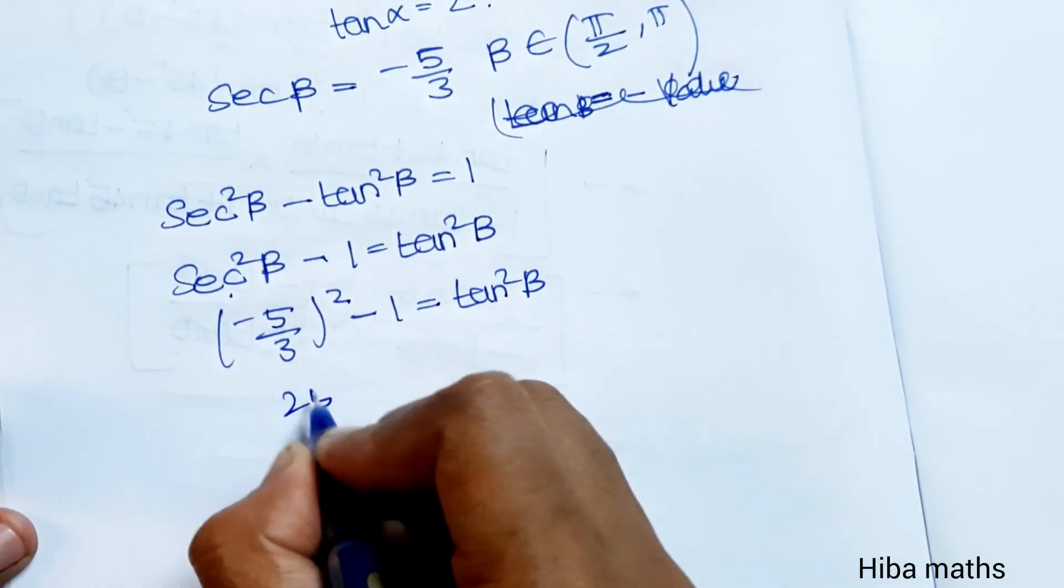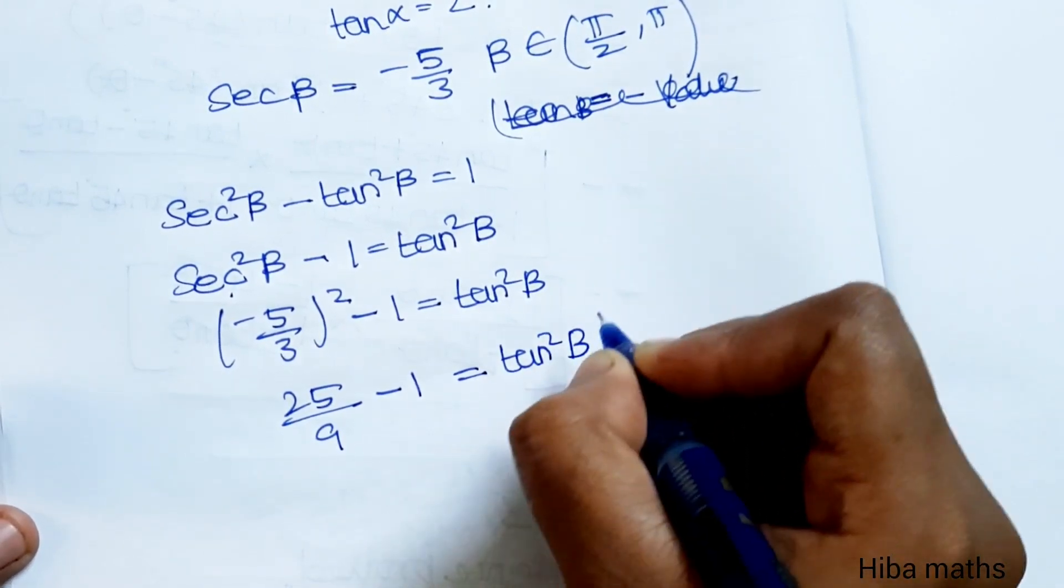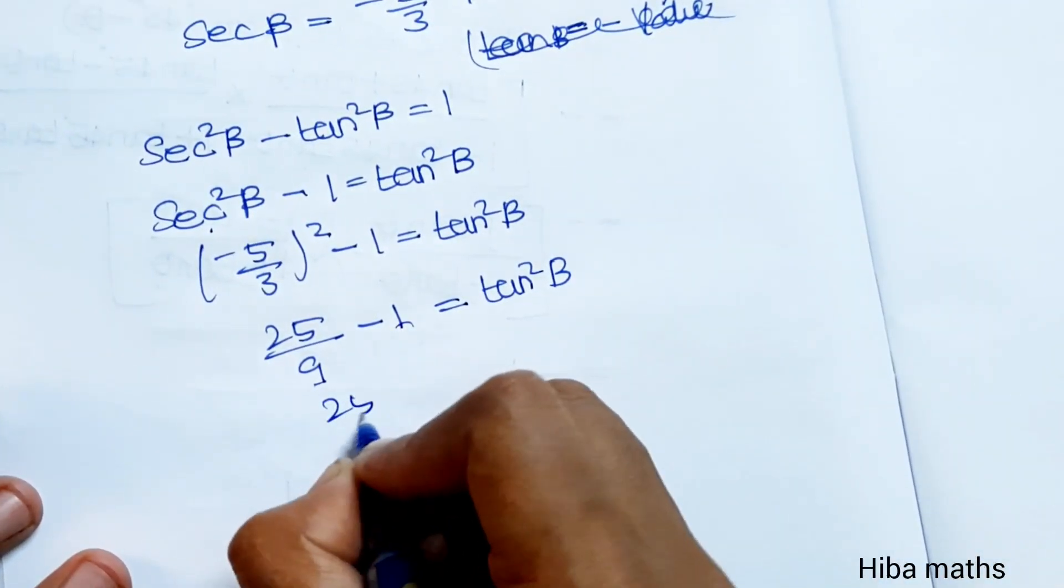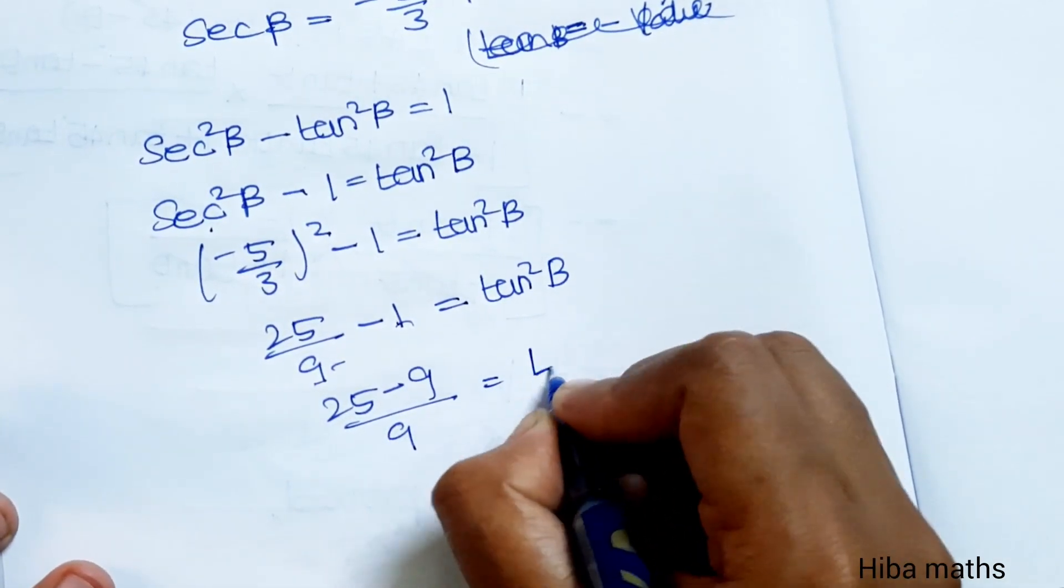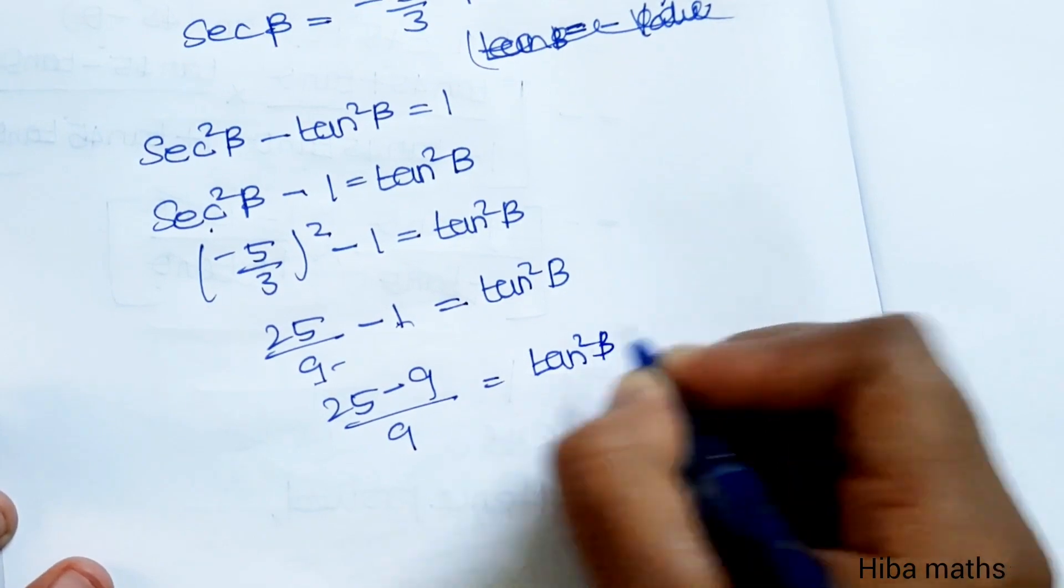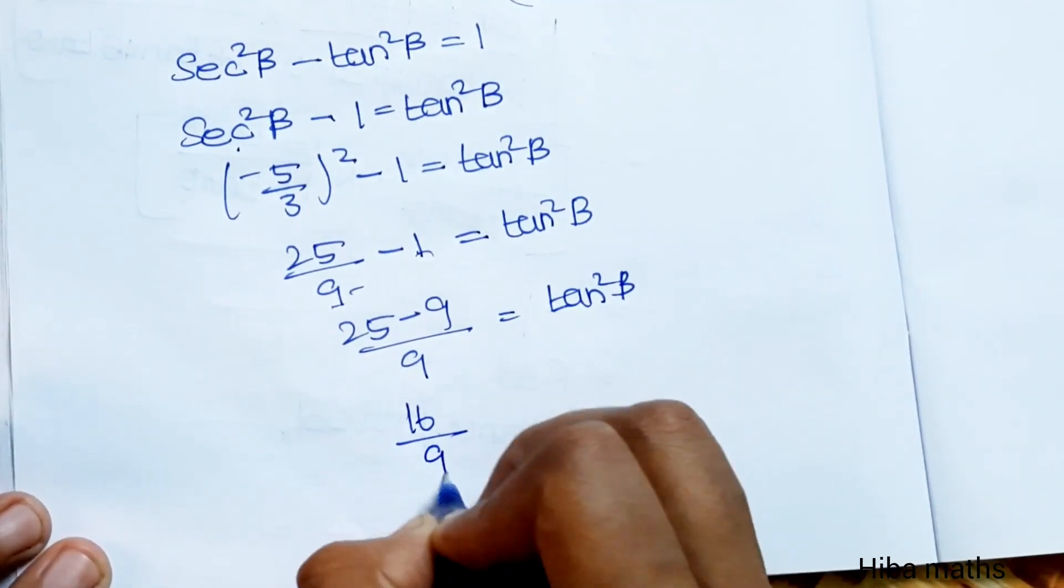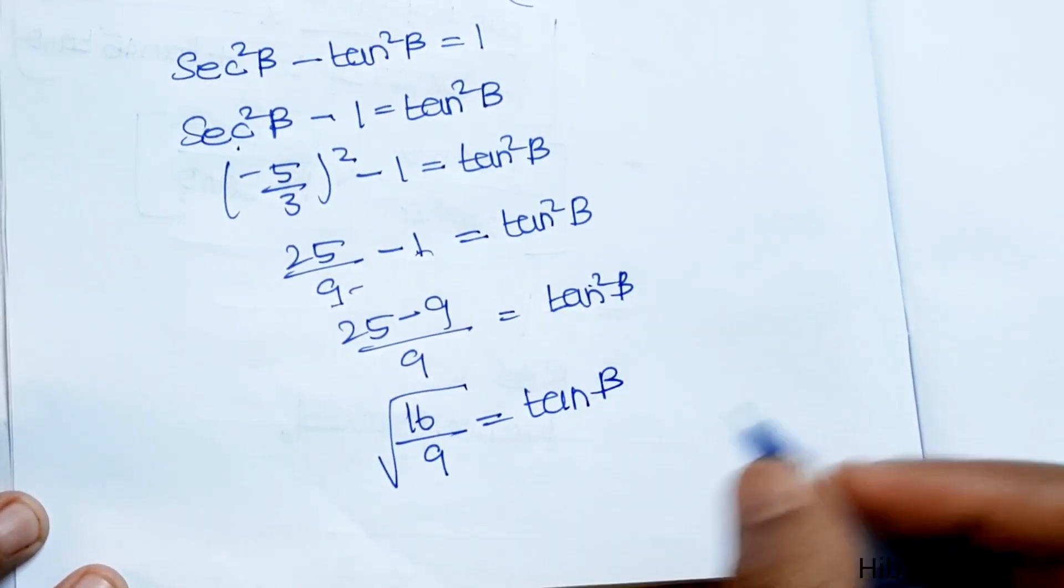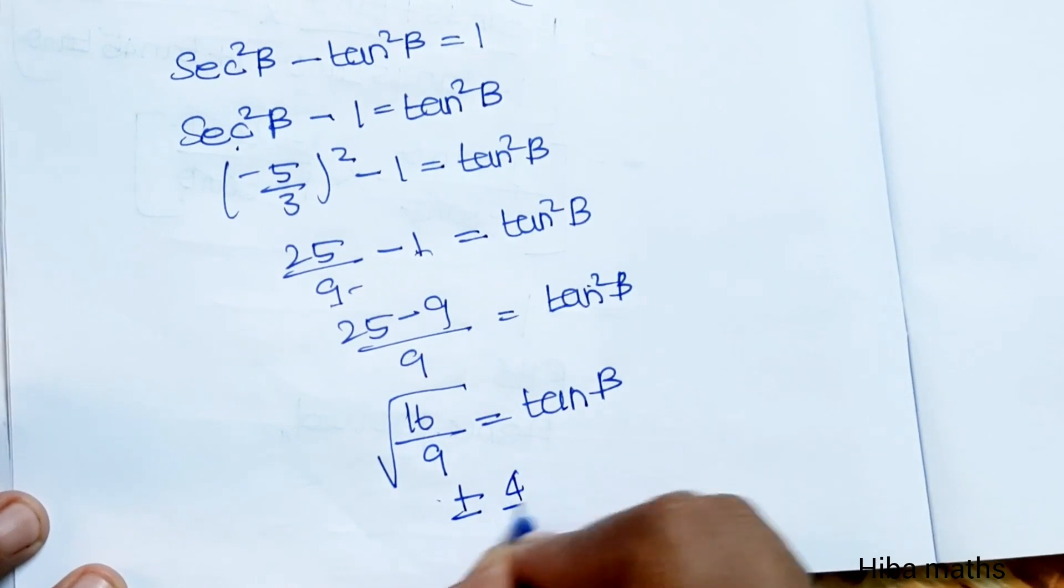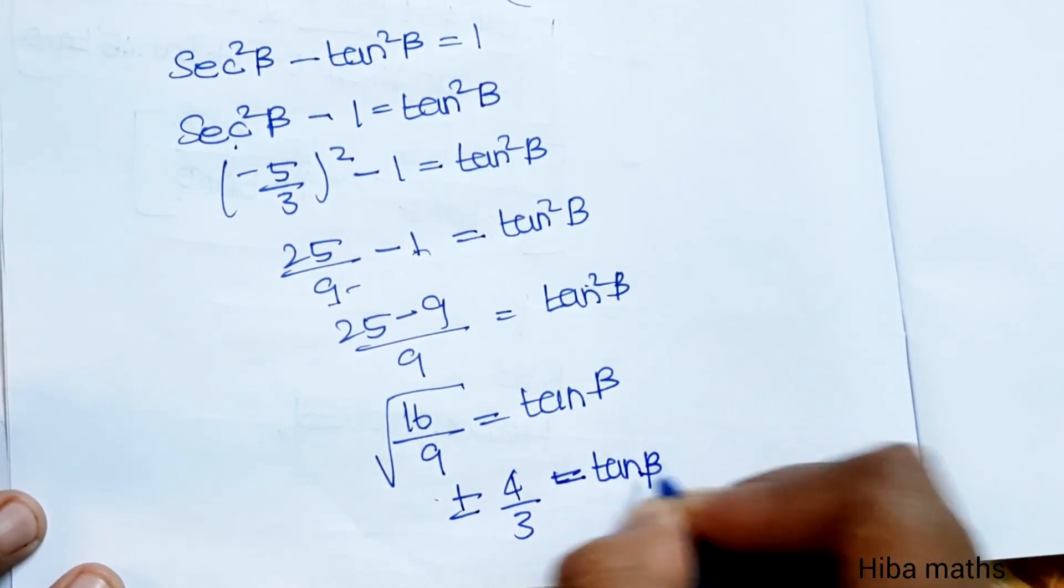sec²β equals (-5/3)² minus 1 equals tan²β. 5 squared is 25, so 25/9 minus 1 equals tan²β. Cross multiply: 25 - 9 = 16, giving 16/9 equals tan²β.